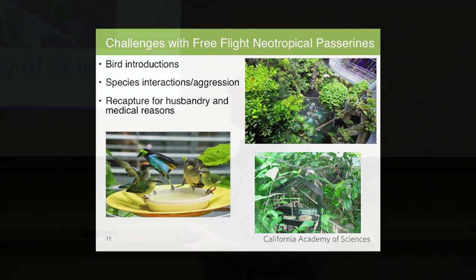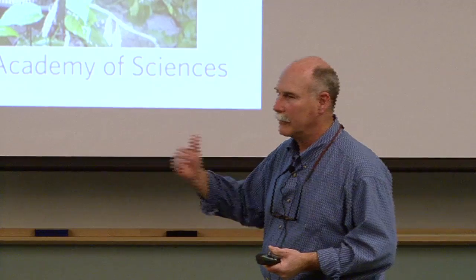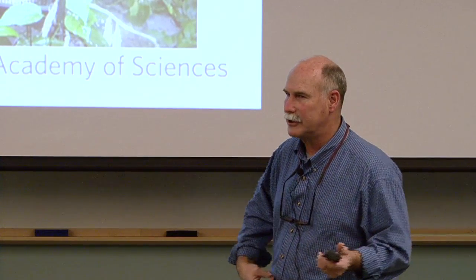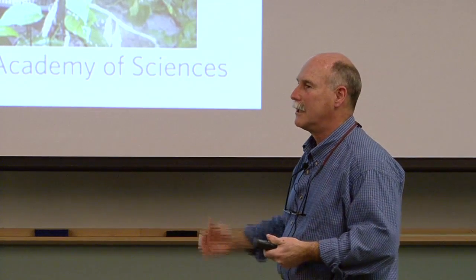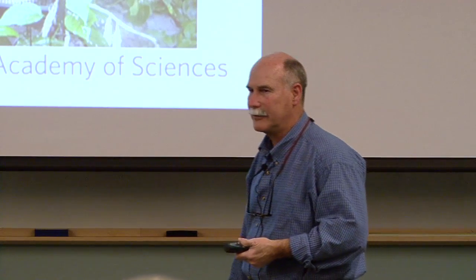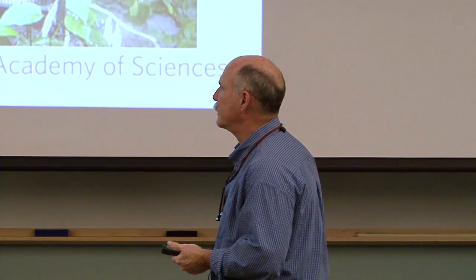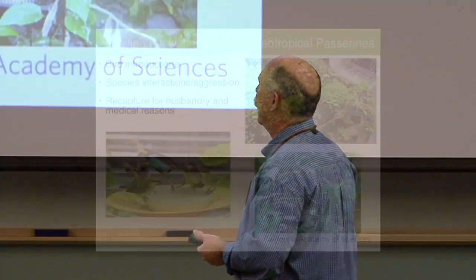For bird introductions, we introduce the smaller, less aggressive species first to give them time to find their safe spots and get a feel for the environment, then release the more aggressive, larger birds afterward. Birds are also placed in howdy cages for a number of days to acclimate. Shade cloth is put down over the glass areas of the bola to help prevent them from flying into the glass when first released. The combination of howdy cages, releasing less aggressive species first, and netting has minimized fatalities during introductions.